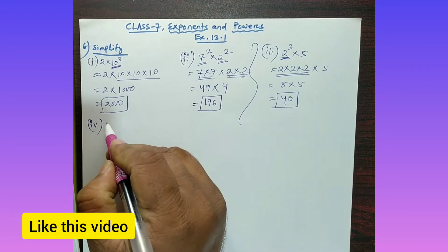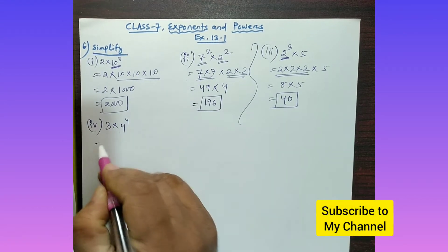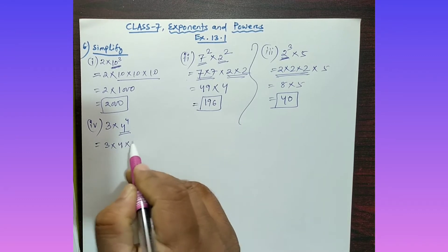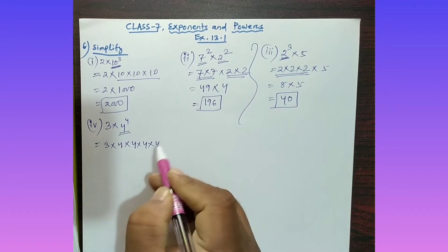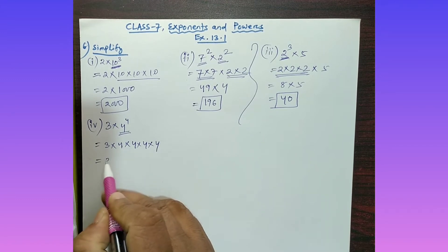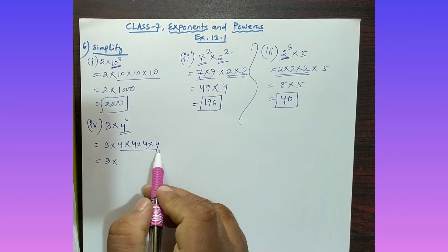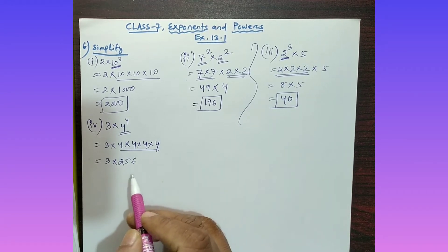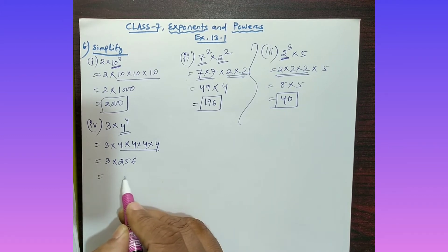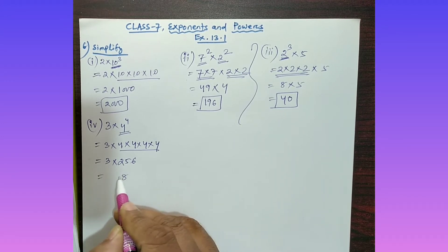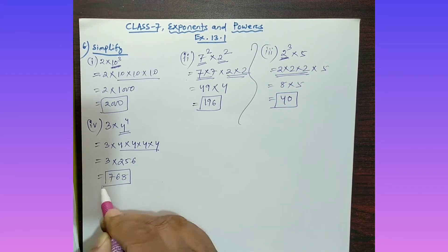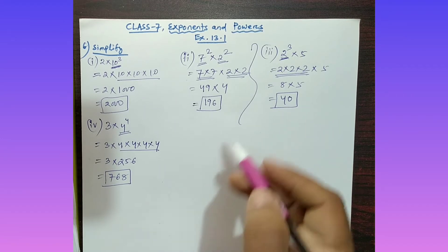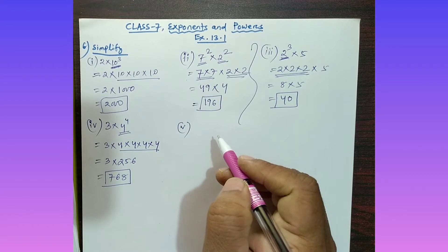Part (iv): Simplify 3 into 4 to the power 4. Four to the power 4 means 4 is multiplied 4 times: 4 into 4 into 4 into 4, which equals 256. Then multiply by 3 to get 768. So 768 is your answer.